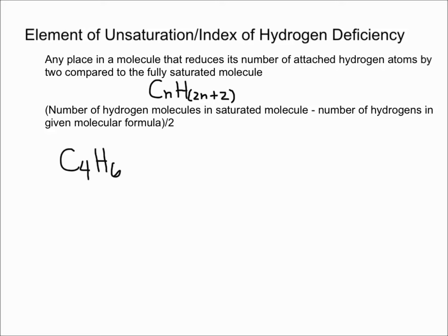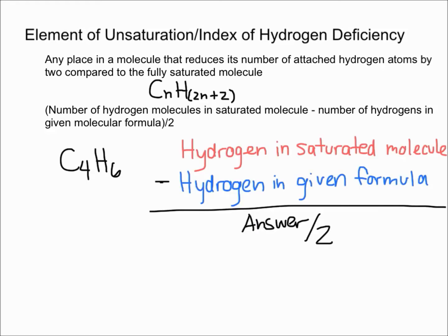I think it's probably easier if I do an example. We're going to use this molecule, C4H6, and try to find the index of hydrogen deficiency, or IHD. I've written out an easier way of viewing this.